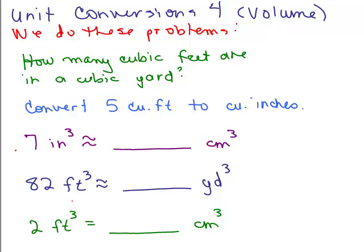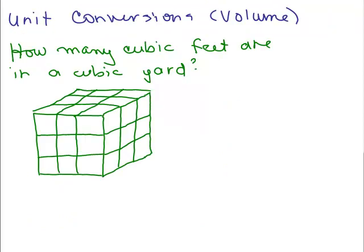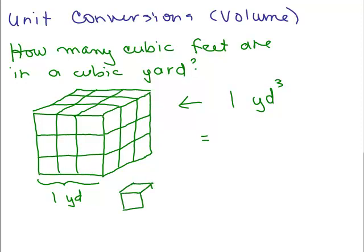We're going to go over five problems on this video involving unit conversions with volume. So we're talking something in 3D. For instance, how many cubic feet are in a cubic yard? Well, imagine that each side of this big cube is one yard and I've broken it up into three feet, because we know there are three feet in a yard. So it's three feet across the bottom, going back it's three feet, and going up it's three feet. So this whole thing is called one cubic yard, written as yards cubed. The question is how many little cubic feet are in there? Each cubic foot is one of these little tiny blocks — one foot by one foot by one foot.